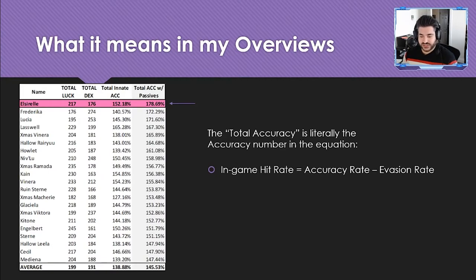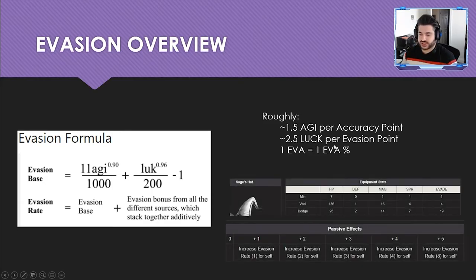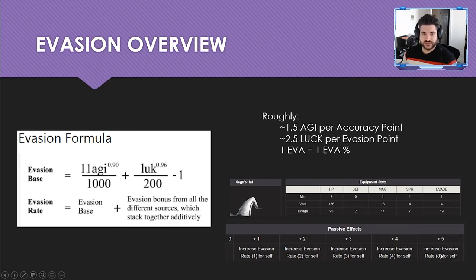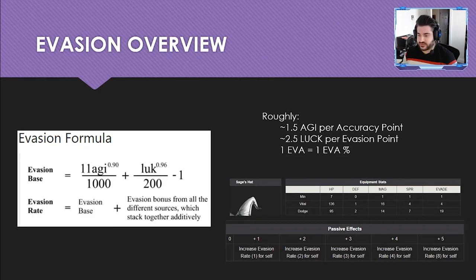The evasion overview uses the same concept. The data-mined formula works out roughly to: agility divided by 1.5 gives evasion points, luck divided by 2.5 gives evasion points, and each evasion point equals one percent. External evasion like the Sage's Hat at 19 means 19 percentage points added. The difference between a +2 and a +5 evasion source is 6% more dodge chance — which is material when you stack all sources.